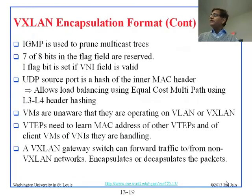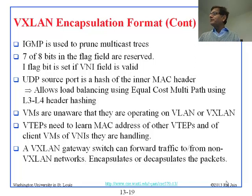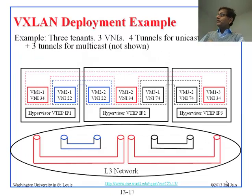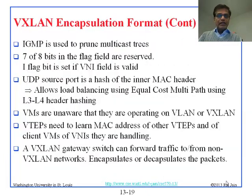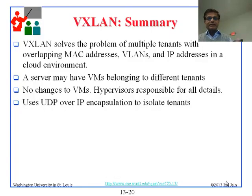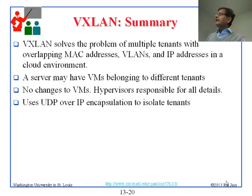VMs are unaware that they are operating on a VXLAN — they don't see any of that. VTEP needs to learn the MAC addresses of other VTEPs. A VXLAN gateway switch can forward traffic to and from non-VXLAN networks. The summary is that VXLAN solves the problem of multi-tenancy: servers may have VMs belonging to many different tenants, and they will not see each other's traffic. No changes are needed to the VMs — hypervisors are responsible for all the details — and UDP is used for the encapsulation.